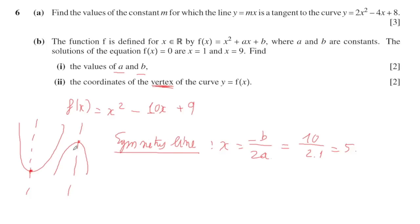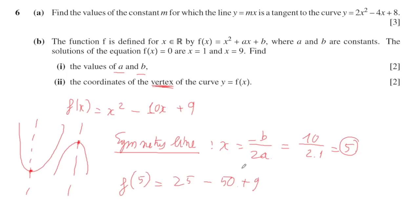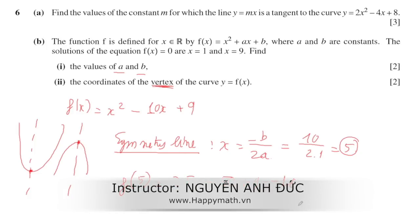The axis of symmetry passes through the vertex, giving the x-coordinate. To find the y-coordinate, substitute x equals 1.5 back into the function: (1.5) squared minus 3 times 1.5 plus 2, which equals 2.25 minus 4.5 plus 2, giving minus 0.25. So the coordinates of the vertex of the curve are (1.5, minus 0.25). Thank you.